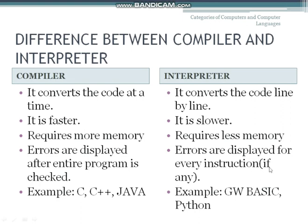Compiler errors are displayed after the entire program is checked, but in an interpreter, errors are displayed for every instruction. Examples of languages that use a compiler are C, C++, and Java. Examples of languages that use an interpreter are GW-BASIC and Python.